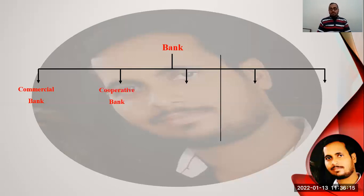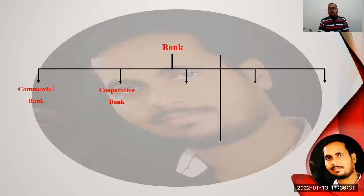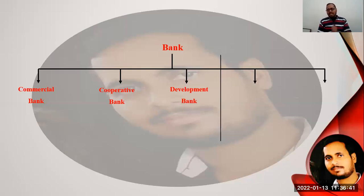Another type is cooperative banks. Cooperative banks are those banks which are made by the cooperation of people, and the government judges and makes policies providing license for banking facilities. Those cooperative societies are called cooperative banks. The third type is development banks. Development banks are those banks which target the development of an area, development of industries, or the development of society.